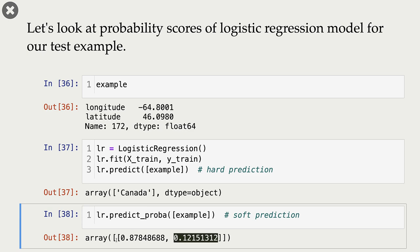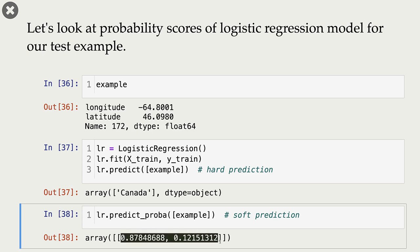What are these scores telling us? The first score tells us that the model is 87% confident that the class is Canada. And since these are probability scores, these numbers should sum to 1. Because they sum to 1, one of these scores should be greater than or equal to 0.5, and the class corresponding to that score is going to be our hard prediction.